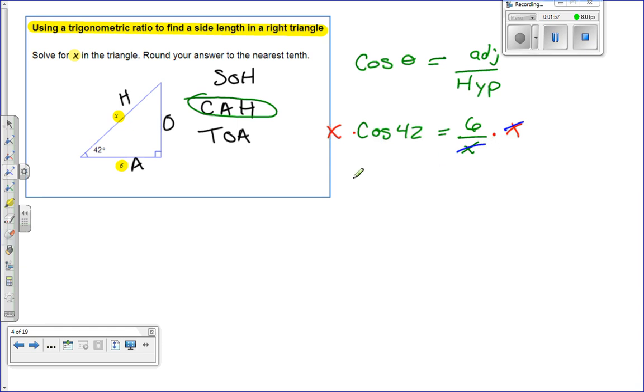And you're left with x times cosine of 42 degrees equals 6. Well, we don't want this cosine of 42 degrees here either. So how do we get rid of that? Let's divide by cosine of 42.